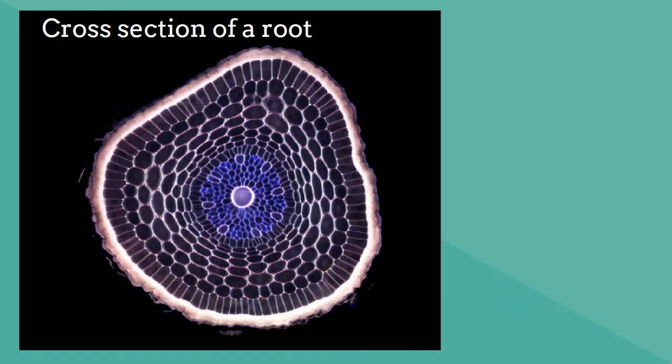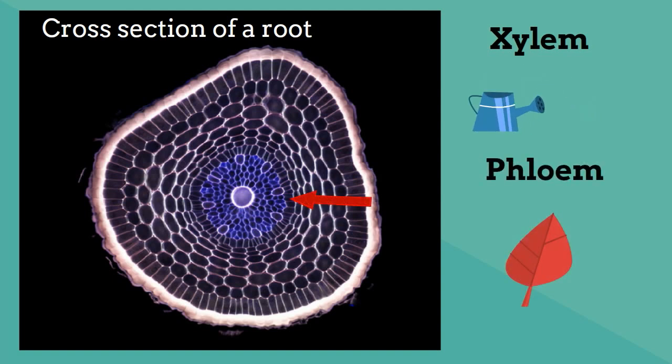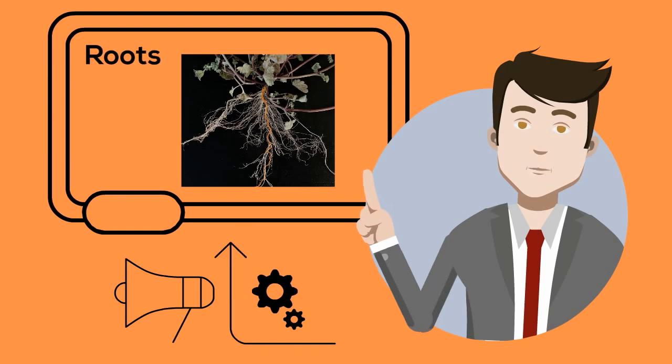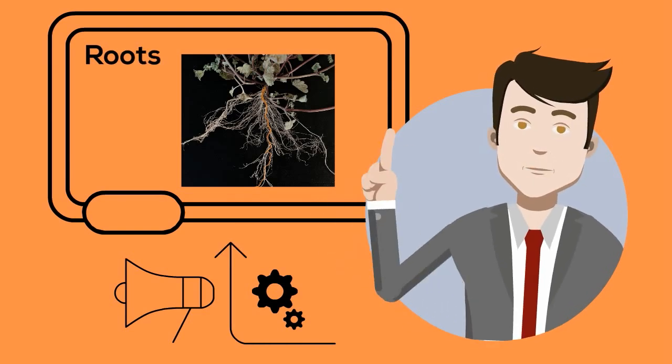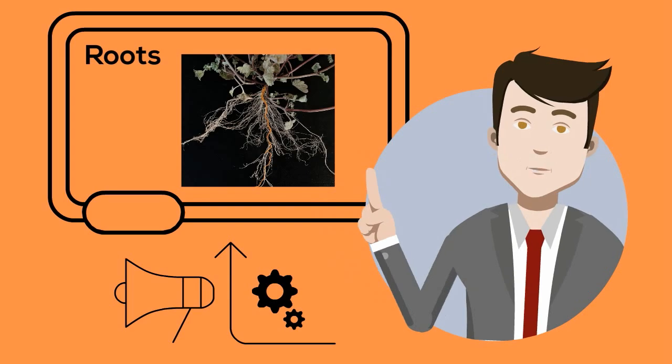First, xylem transport water from the root to the rest of the plant. On the other hand, phloem tissue transports food manufactured in the leaves to the root. The root tissues may then use the food for growth or store it for future use for the plant. So there we have a typical root of a plant. It's more complicated than you may think. It helps keep the plant alive and anchored.